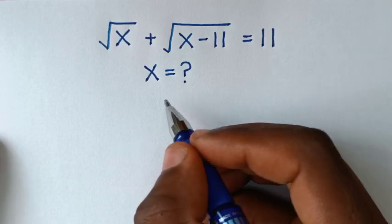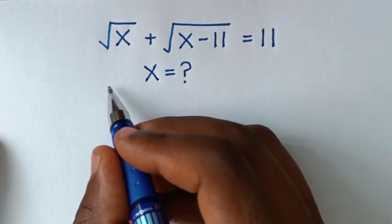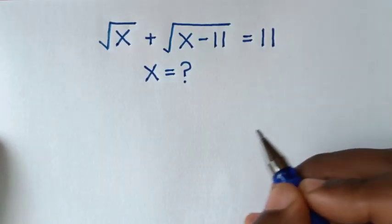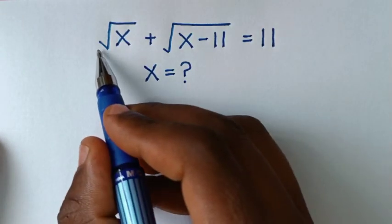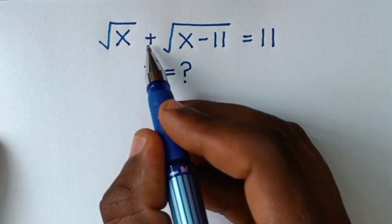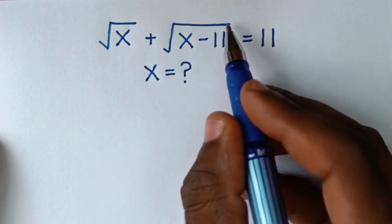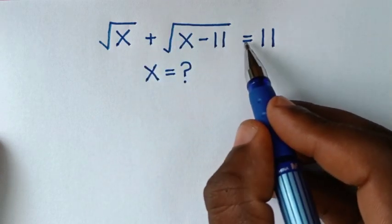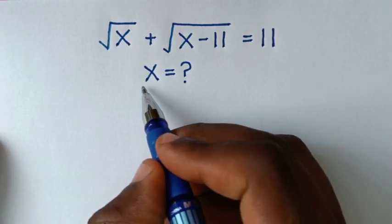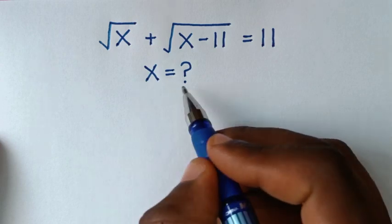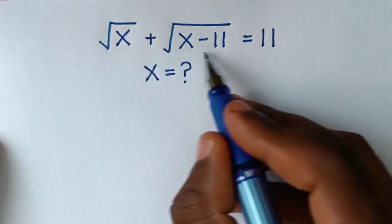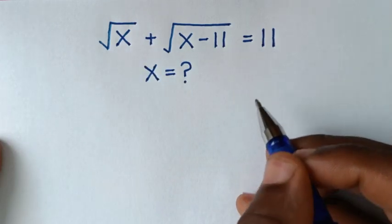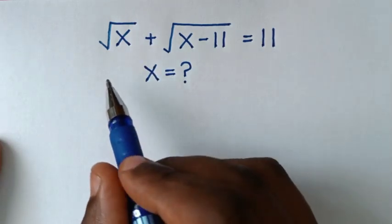Hello, you are welcome to solve this math problem, which is: square root of x plus square root of x minus 11 is equal to 11. We need to find the value of x from this equation.